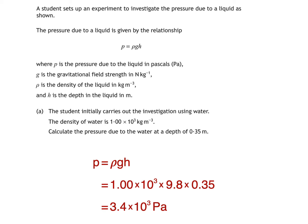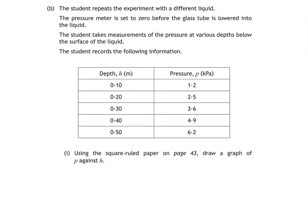Next up, it's the bit we all love to hate — drawing a graph. Part B says the student repeats the experiment with a different liquid. The pressure metre is set to zero before the glass tube is lowered into the liquid. The student takes measurements of the pressure at various depths below the surface of the liquid and records the following information. Using the square ruled paper on page 43, draw a graph of P against H. There's also another piece of graph paper on the following page if needed.